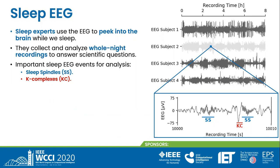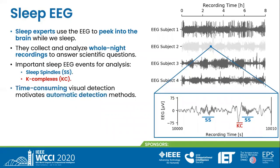In blue, you can see two sleep spindles, bursts of oscillatory activity of 11 to 16 Hz. And in red, you can see one K-complex, a high-amplitude biphasic wave. Visual detection is time-consuming considering the time scale of these events, the length of the recordings, and the number of subjects, motivating automatic detection methods.